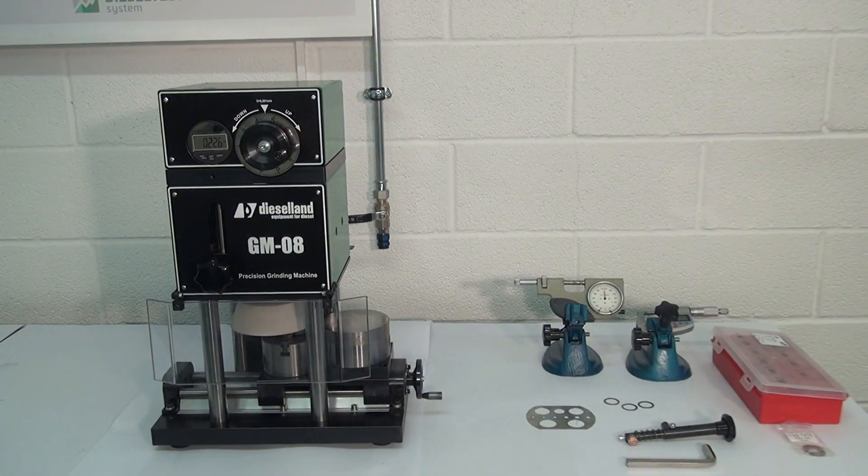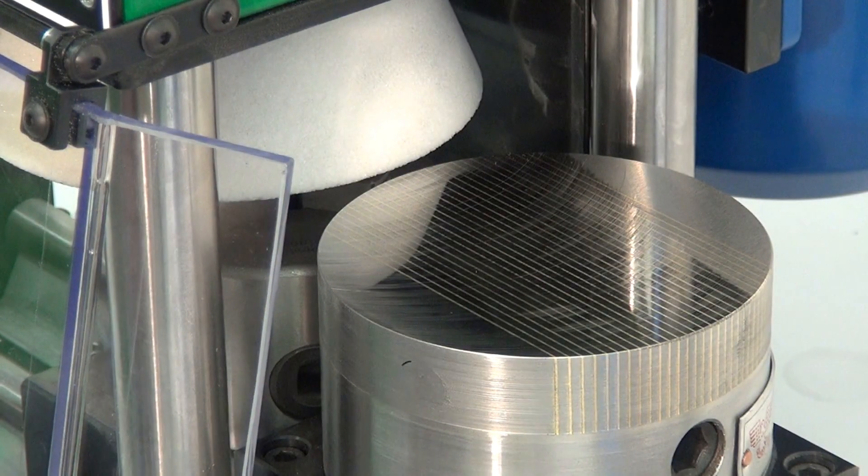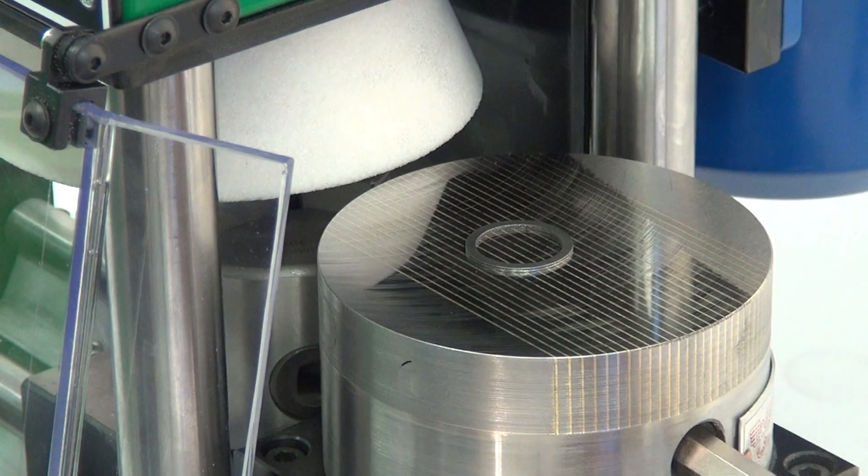Let's consider operation of the machine on the example of polishing washers. Move the carriage with the magnet into the position for washer installation. Transfer the magnet to the working position.